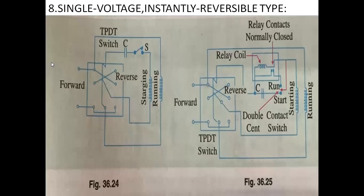Next: single voltage instantly reversible type. If using this type, the motor can be instantly reversed. We take out four leads externally and connect them. However, it is manually done. For instantly reversible operation, we have to do it within seconds. Normally, the motor must be brought to complete rest and then started in the reverse direction, because the centrifugal switch cannot close unless the motor has practically stopped.